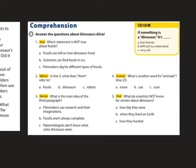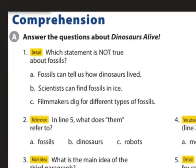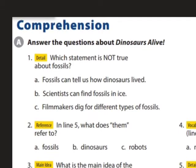Make sure you are on page 104 for the next activity. Now, comprehension — in exercise A we're going to answer some questions. But first, we have to identify what type of question each one is. Number one is a detail question. Detail means that the answer is going to be exactly as stated in the text.